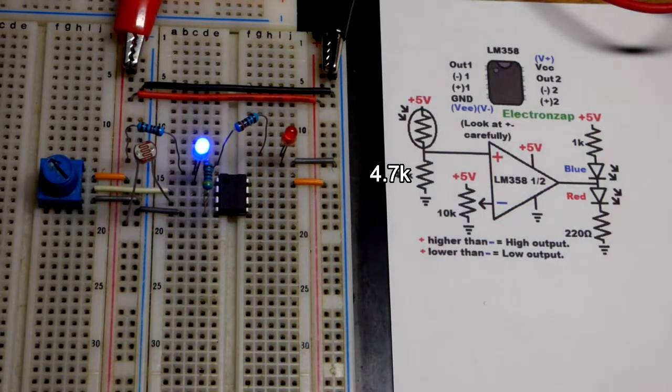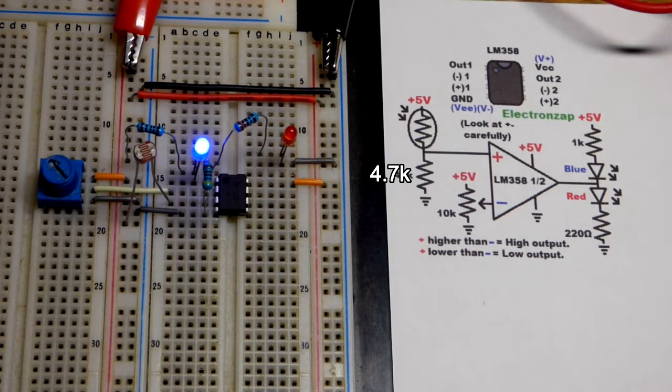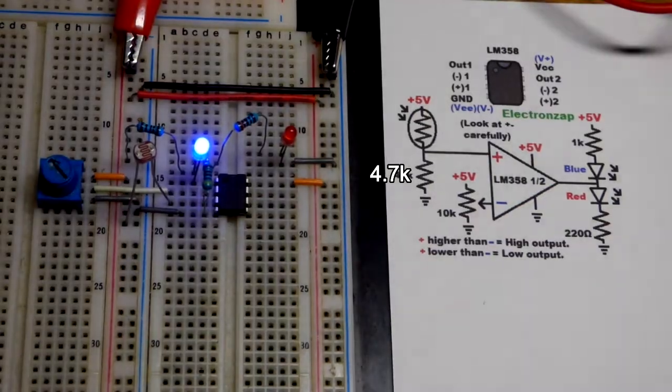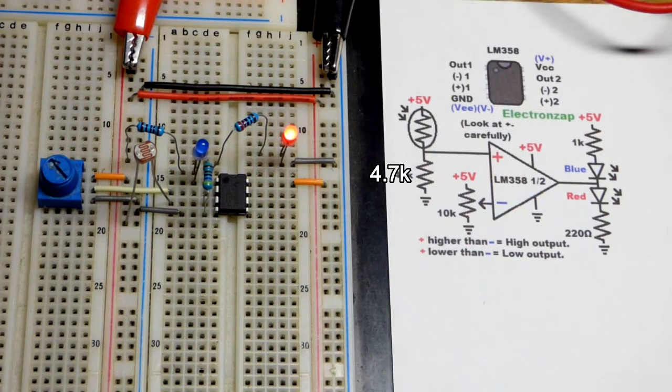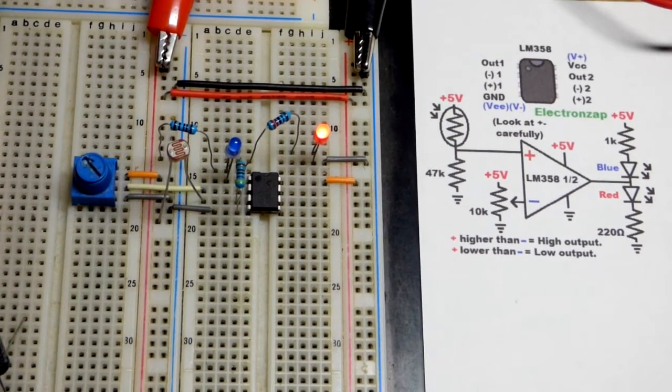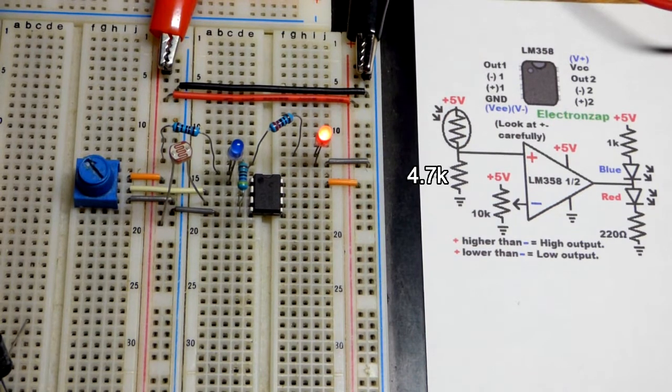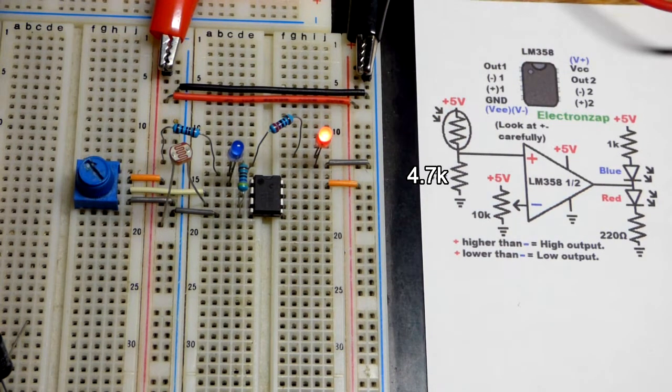Turn it down one, two notches and there you can see that the blue LED lights up and it will stay lit up if we get darker and as long as it's darker than what we set voltage wise the blue LED will light up. But now that it's brighter the red LED will light up.